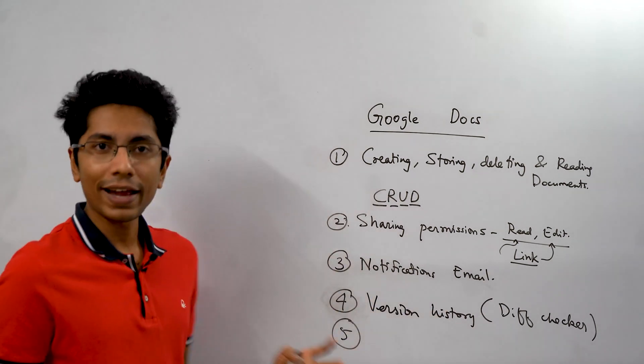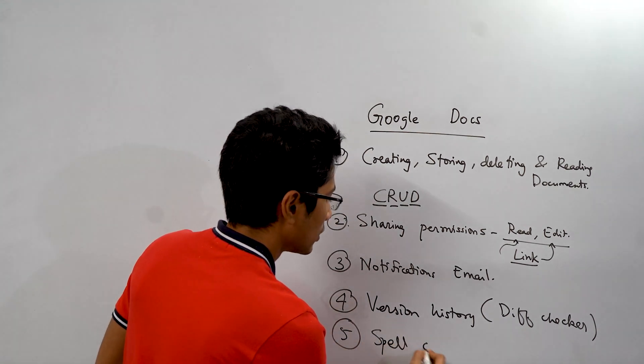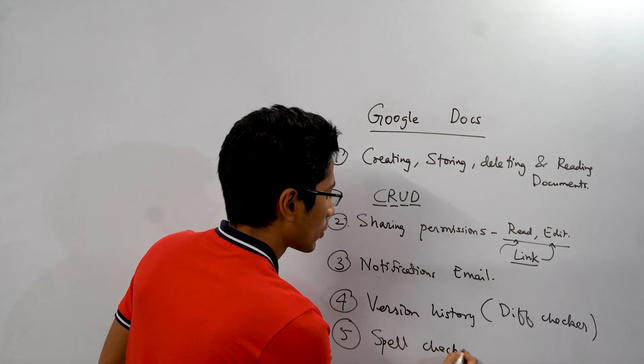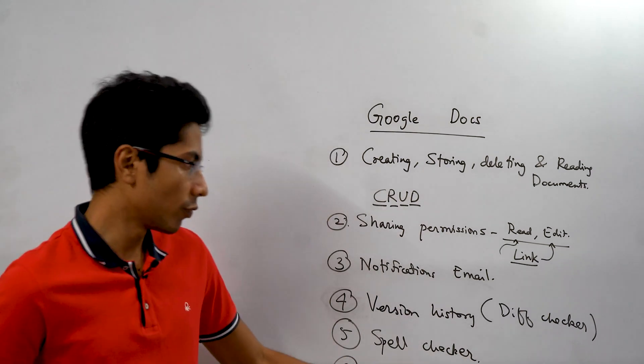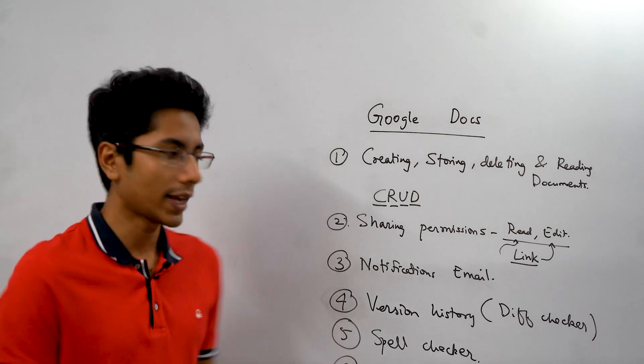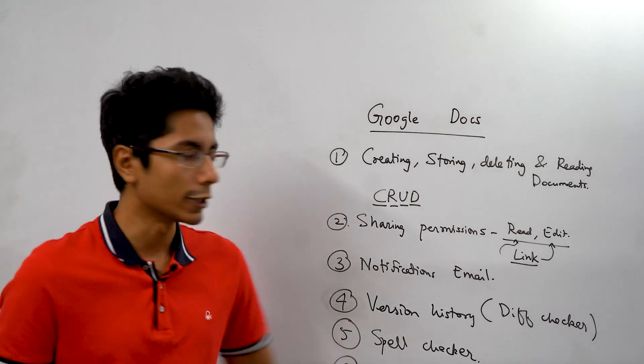So point number five is spell checking. When you're writing on a Google Doc you need some sort of a spell checker which tells you whether this is a correct word or not. We'll be taking a particular algorithm on spell checking and we'll be discussing that in detail here.